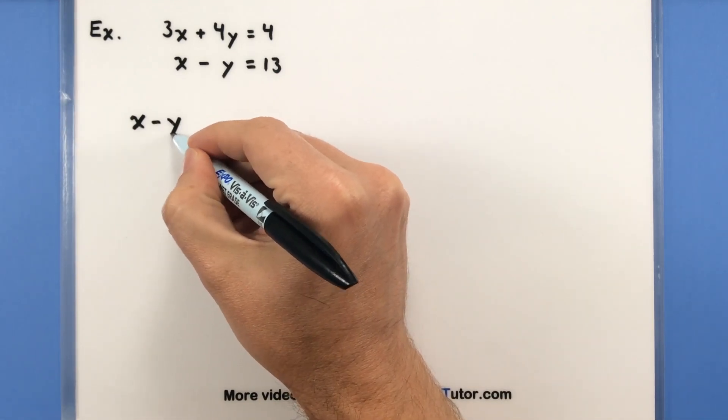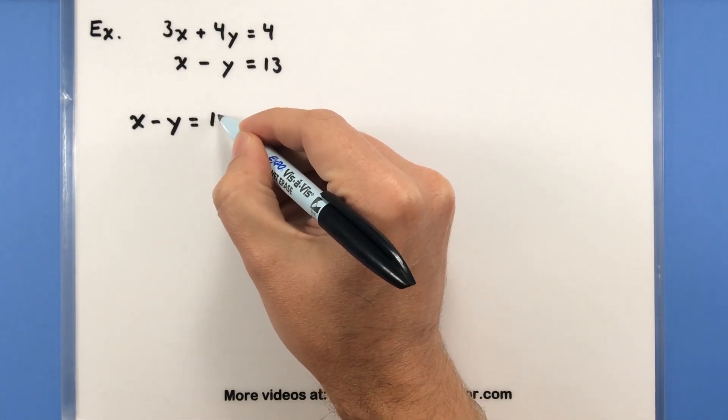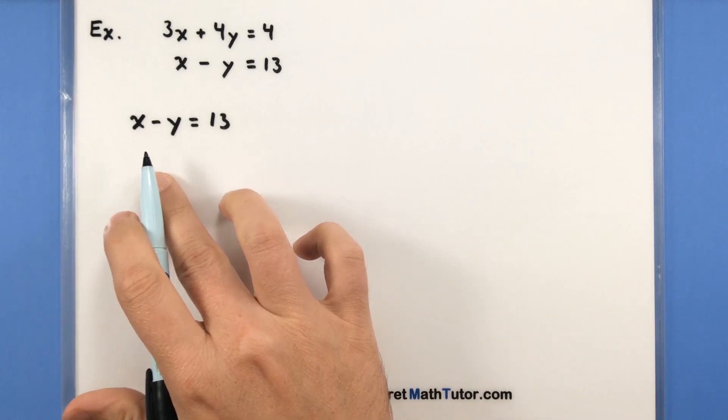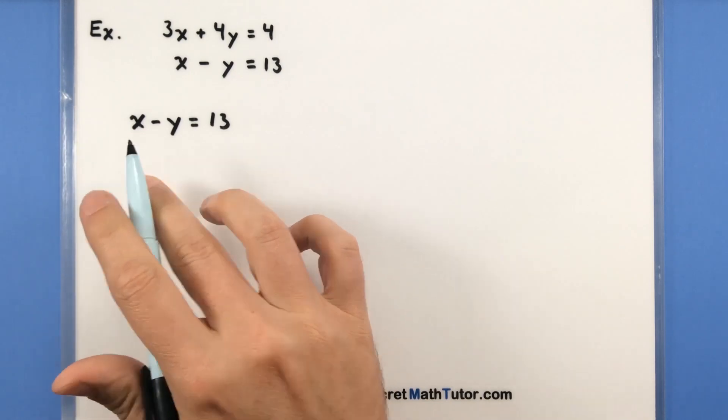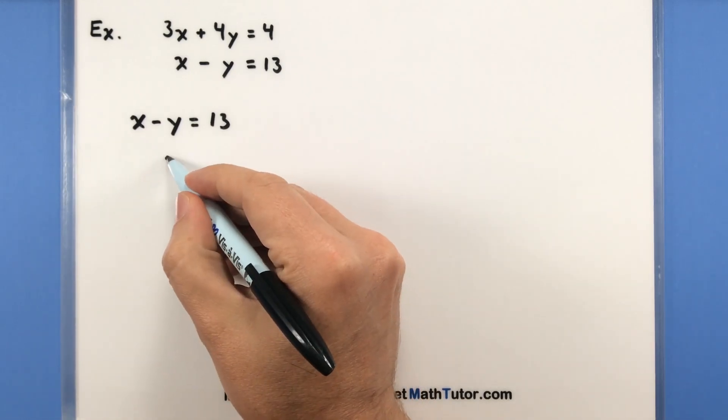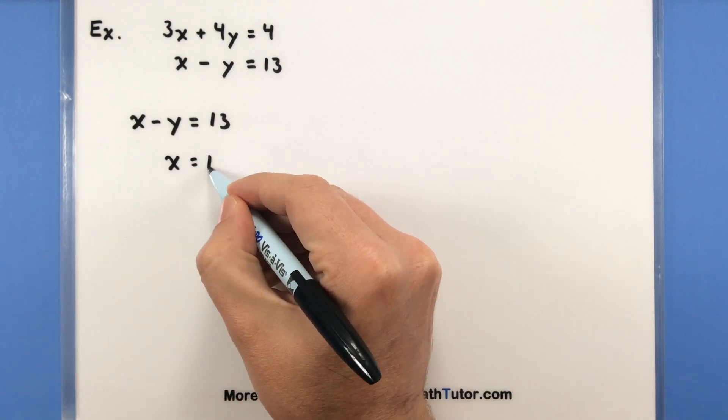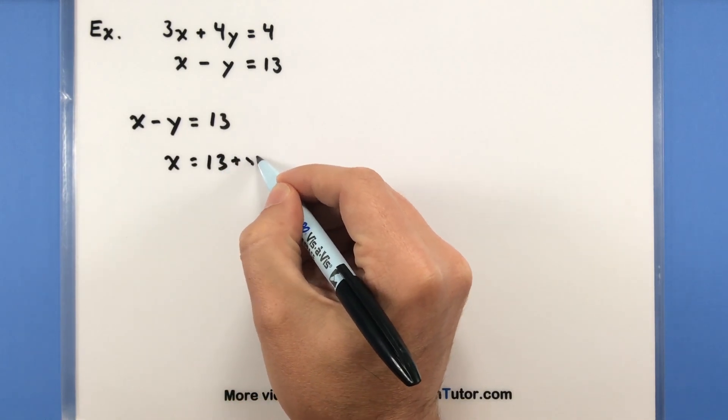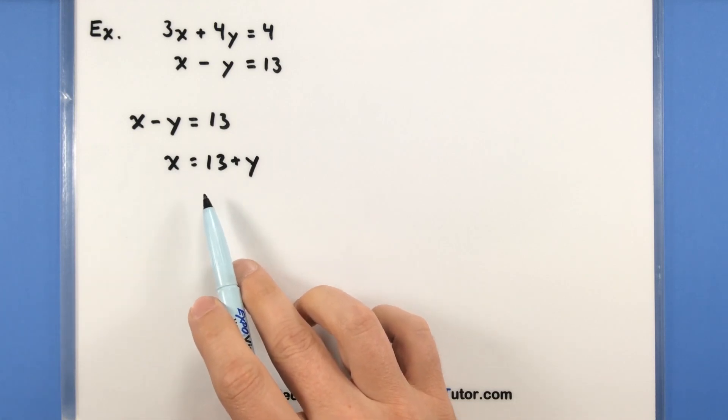So let's go ahead and just rewrite it just as it is, and then really work on getting that x all by itself. So we can do that by moving the y to the other side, and we'll get x = 13 + y. Okay, so we know what x is equal to.